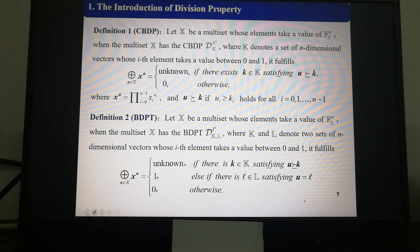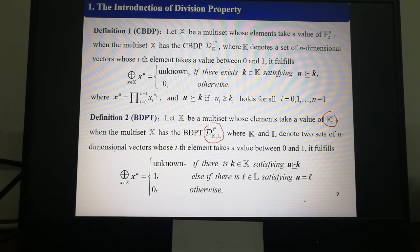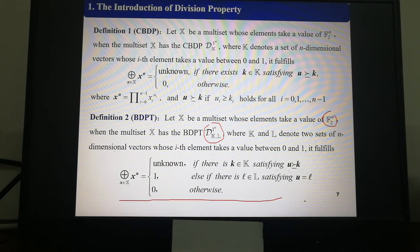Then, we will introduce the definition of BDPT. The definition of BDPT is similar to the definition of CBDP. Let X be a multiset whose elements take the value of F_2^N. When the multiset X has BDPT D_{K,L}, where K and L denote two sets of n-dimensional vectors whose i-th element takes the value between 0 and 1, it fulfills the following equations. The first one, if there is k in K satisfying u greater than or equal to k, it means that this sum is unknown. As if the first condition is not satisfied, if there is l in L satisfying u equal to l, then we know that the sum of this is 1. Otherwise, the sum is 0.